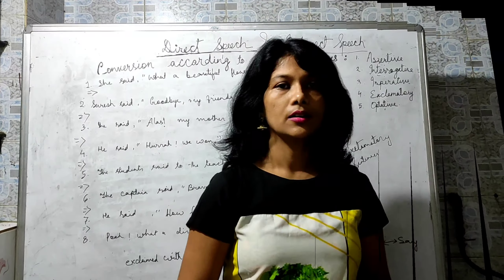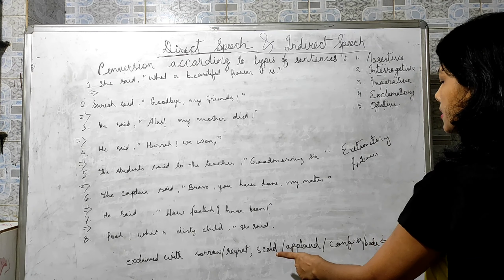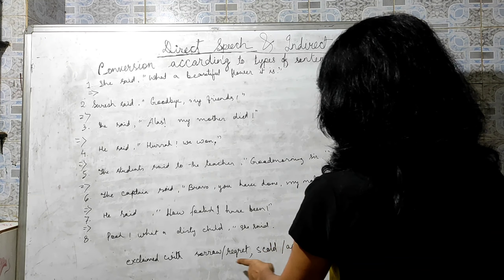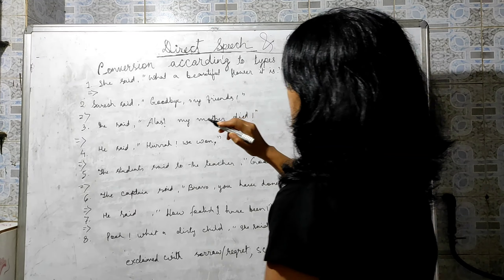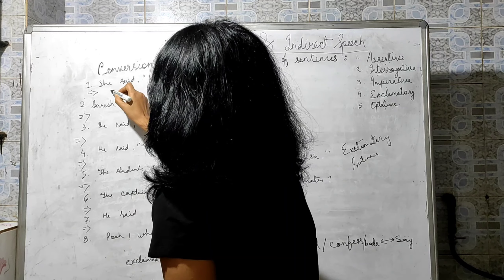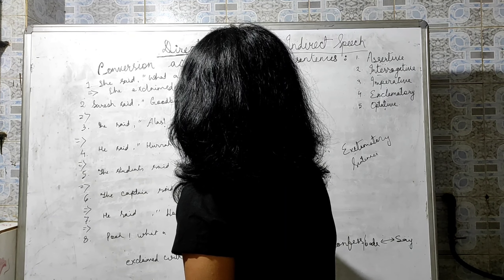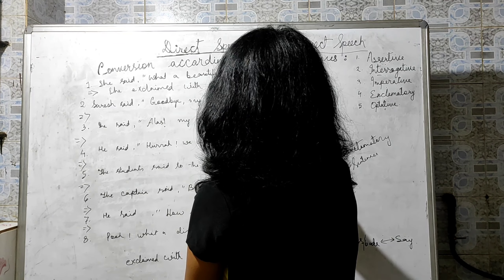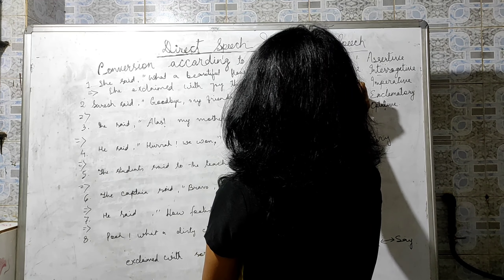For exclamatory sentences, in place of 'say' we use: exclaimed with sorrow, regret, scold, applaud, confess, or hatred — according to the need. Example: 'See said, what a beautiful flower it is!' — this is joy — becomes 'See exclaimed with joy that the flower was very beautiful.' Note: 'is' changes to 'was' in indirect speech.